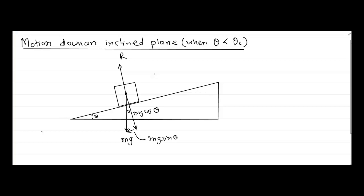Because theta is less than the angle of repose, this block will not slide down on its own. So we need to apply a force onto this block. Let us say we apply a force F at an angle alpha to take the block down. This force F will have two components: one component along the inclined plane and one component perpendicular to the inclined plane.